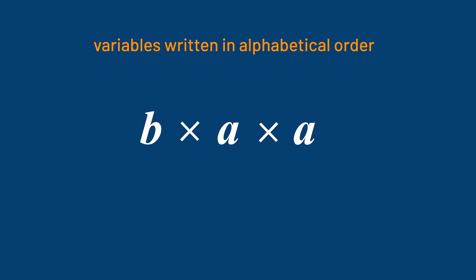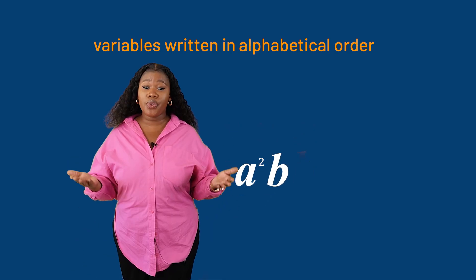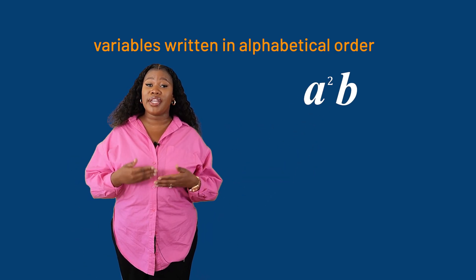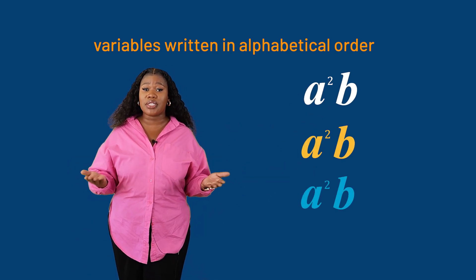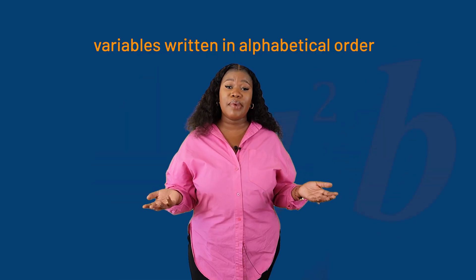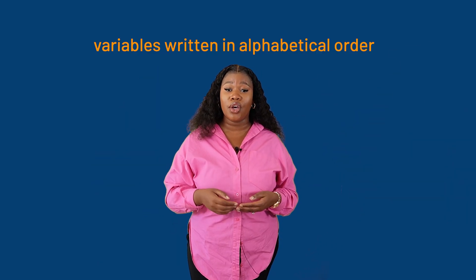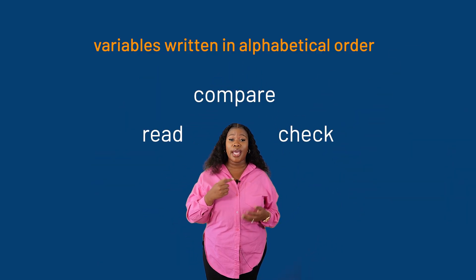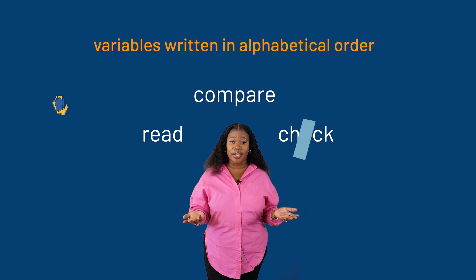Now look at this one. b times a times a. In alphabetical order, we write it as a to the power of two times b. We use alphabetical order so that everyone writes the expressions the same way. This makes algebra easier to read, compare, and check even though the value doesn't change.